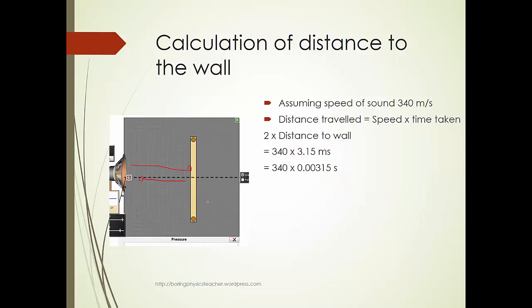So, convert it into seconds, and you obtain that it is 1.071 meters. But the distance of the wall is actually, remember, it's 2 times this distance. So, we need to divide it by 2, and it is roughly about 0.5355 meters, which is 53.55 cm.